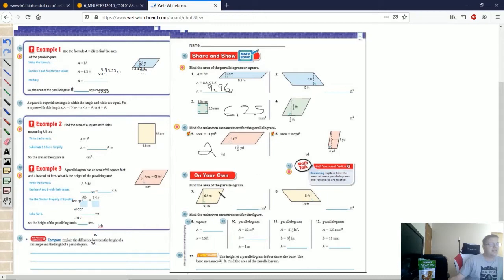Number 7, find the area of the parallelogram. Again, we are going to be working with our base times the height. So we have 6.4 times 9.1. Actually, it probably would have been easier to write that the other way, but it is what it is. That will give us 58.24.